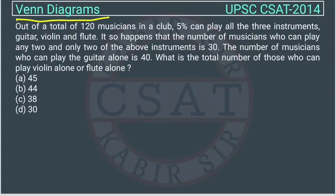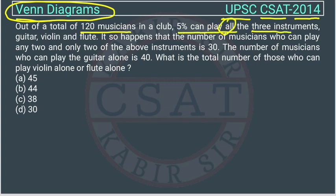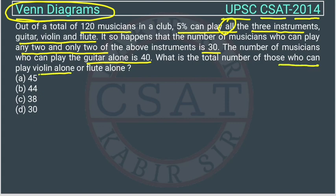This is a question of reasoning taken from the chapter Venn Diagram, asked by UPSC in their CSAT paper of 2014. Out of total 120 musicians in a club, 5% play all three instruments: guitar, violin, and flute. The number of musicians who can play any two and only two of the above instruments is 30. The number of musicians who can play guitar alone is 40. What is the total number of those who can play violin alone or flute alone?